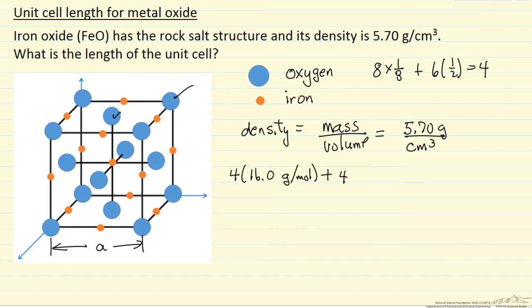which means there must be four iron. And so if we look up the atomic mass for iron, 55.8 grams per mole, and the volume is just going to be A cubed.